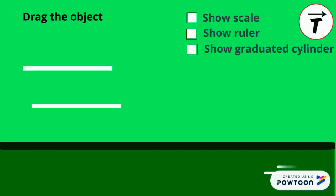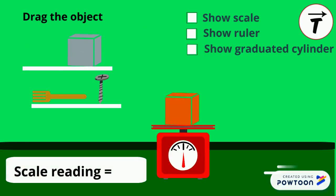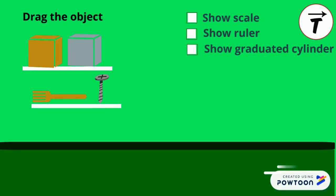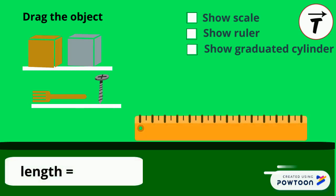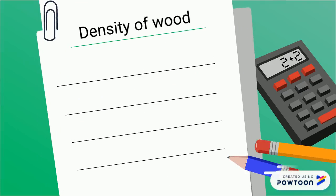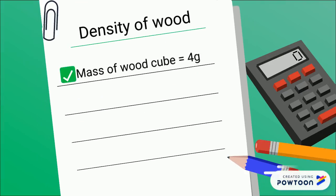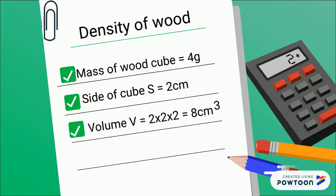Let's find the density of the wooden cube. To measure the mass of the cube, we use the scale. The scale reads 4 grams. To measure the volume of the cube, we measure its size, then use the formula V equals s cubed. The wooden cube has a size of 2 centimeters. The mass of the cube is 4 grams, the size is 2 centimeters, and the volume equals 8 centimeters cubed.